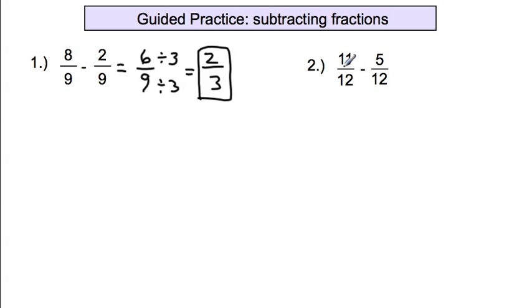Next one, eleven-twelfths minus five-twelfths. The denominators are the same. We're just going to work with the numerators. Eleven minus five equals six. And to simplify that, you can do a couple of things. Obviously, find something to divide by like we did before. And the other thing is we can just take a look. If six is half of twelve, then it's always going to be simplified to one-half. So if the numerator is half of the denominator, simplest form is one-half.